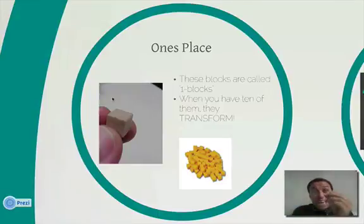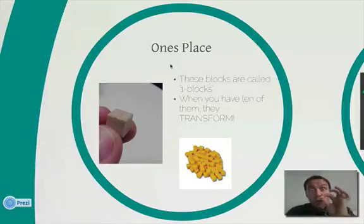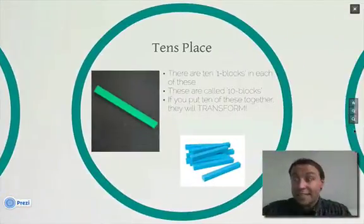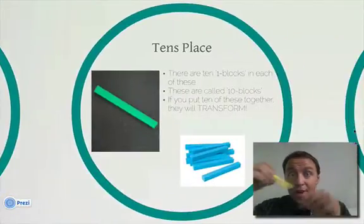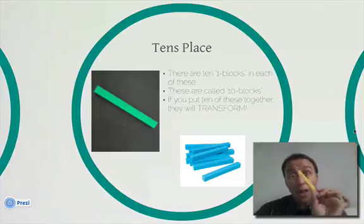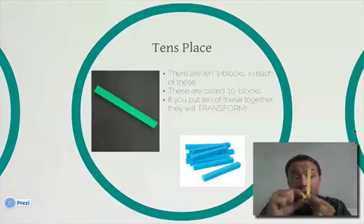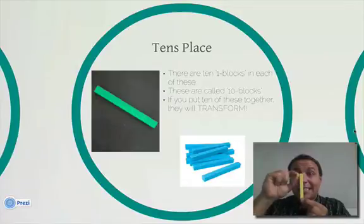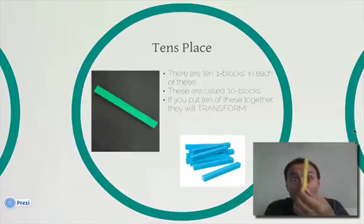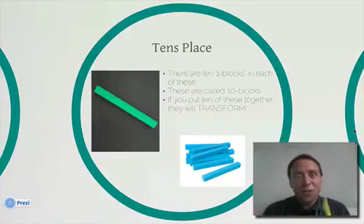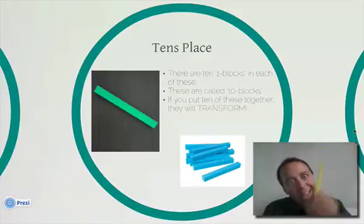Now, if you have 10 of these put together, they transform — they move to another place value. Once you get 10 of them put together, we have what's called a 10 block. And if you look, I'm going to show you visually — you can fit 1, 2, 3, 4, 5, 6, 7, 8, 9, 10 one blocks into each 10 block. So these small one blocks count as the ones place, and these 10 blocks count as the tens place. There are 10 of them in each one.